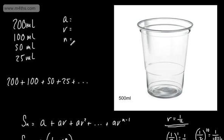So a is the first term, which is 200. The ratio is going to be 1/2 and n is now going to be infinity. So we're summing to infinity.